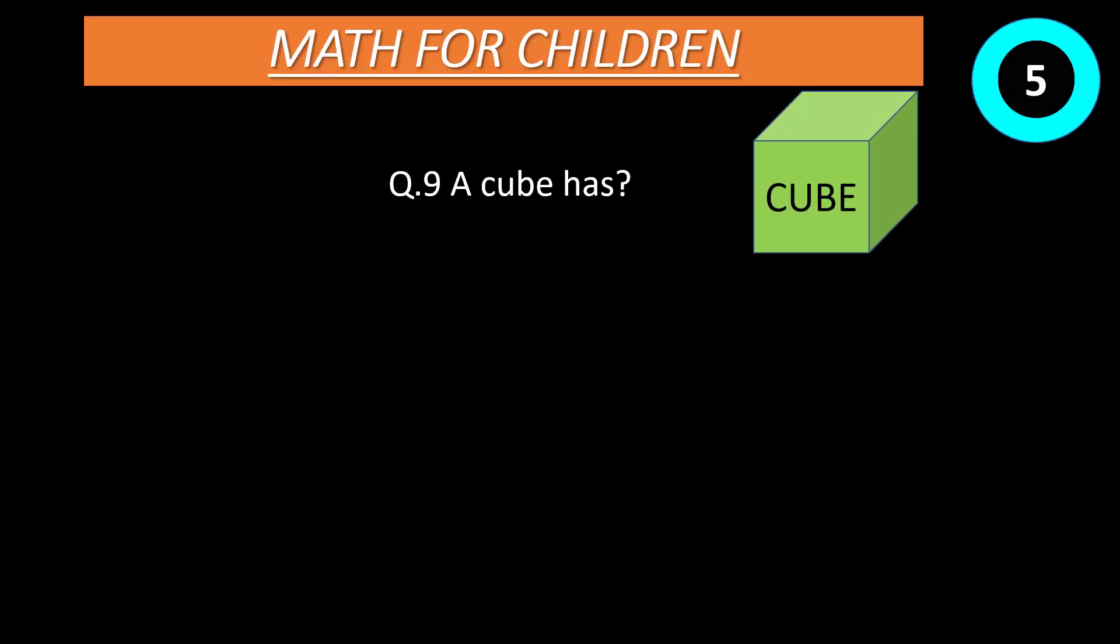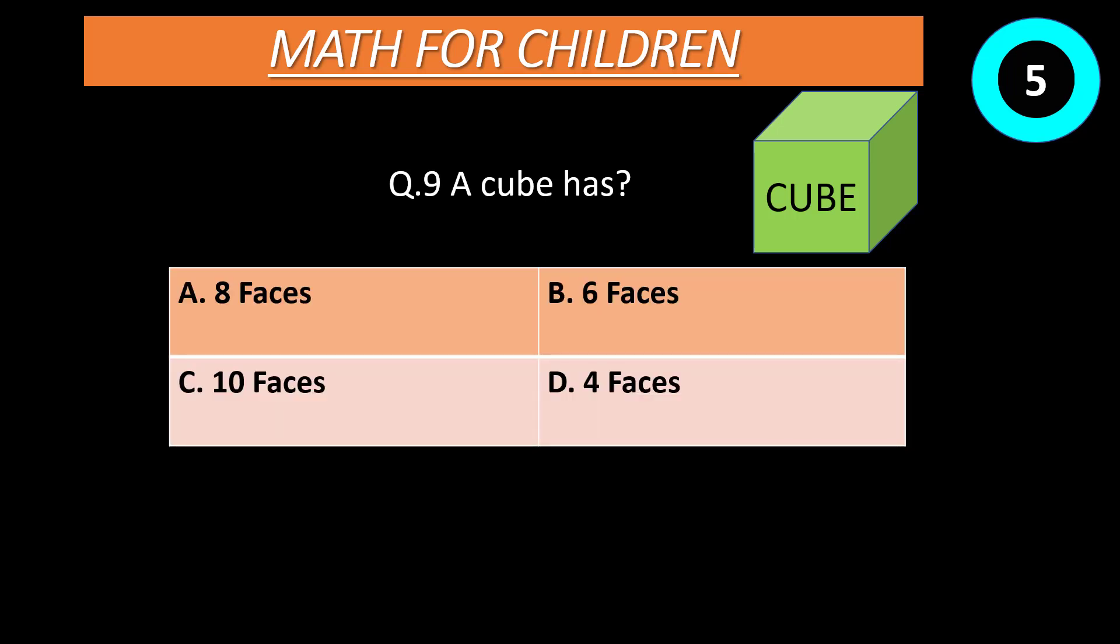Question number 9: A cube has? Option A: 8 faces. Option B: 6 faces. Option C: 10 faces. Option D: 4 faces. Time start now. Correct answer is B, 6 faces.